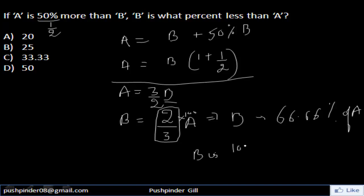That means that B is, you just simply subtract 100 from that. B is 33.33% less than A. So we have our answer here. Let me just take a quick recap here.